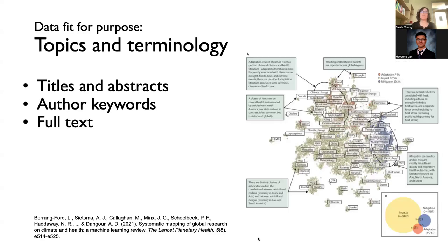Hao Yong showed some really interesting examples of the use of machine learning and topic modeling within bibliometrics approaches. When we get into that, we really want the textual content of bibliographic records — so this might be titles and abstracts, the keywords that authors have assigned to their papers, or in some cases you might be digging into the full text of articles. So these are your data sources for this type of analysis.